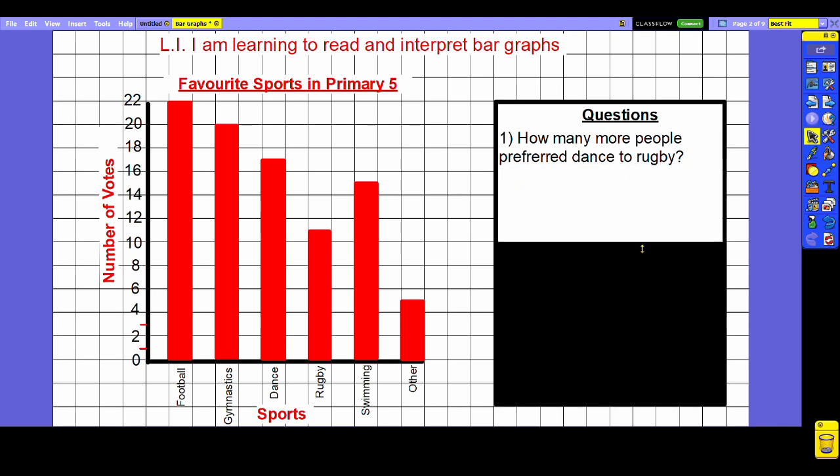This first question is asking us how many more people preferred dance to rugby. This word here tells us that we're looking at the difference between these two categories, and anytime we think of difference we should be assuming that subtraction is involved. Dance we can see is between 16 and 18, therefore dance got 17 votes. Rugby on the other hand got between 10 and 12, therefore it must be 11 votes. To work out the difference, we subtract them: 17 take away 11 is 6. So dance got six more votes than rugby.